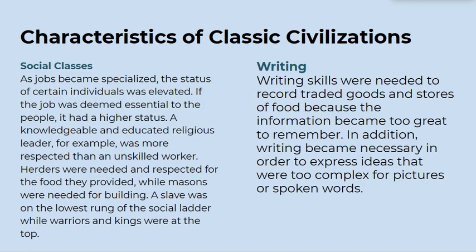Social classes: as jobs became specialized, the status of certain individuals was elevated. If the job was deemed essential to the people, it had a higher status. A knowledgeable and educated religious leader, for example, was more respected than an unskilled worker. Herders were needed and respected for the food they provided, while masons were needed for building. A slave was on the lowest rung of the social ladder, while warriors and kings were at the top.